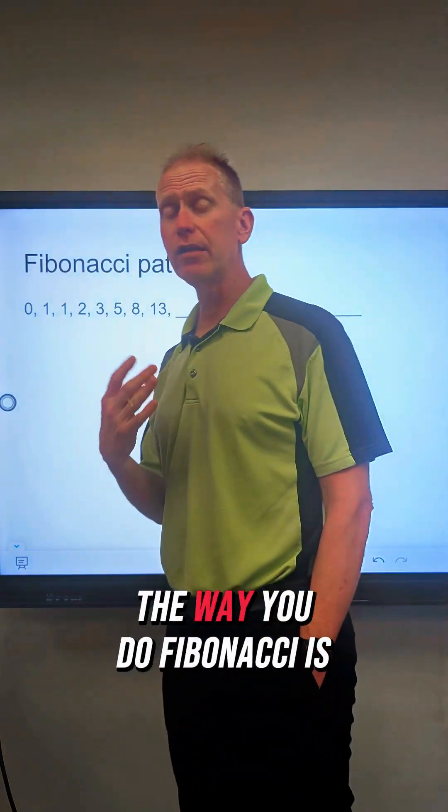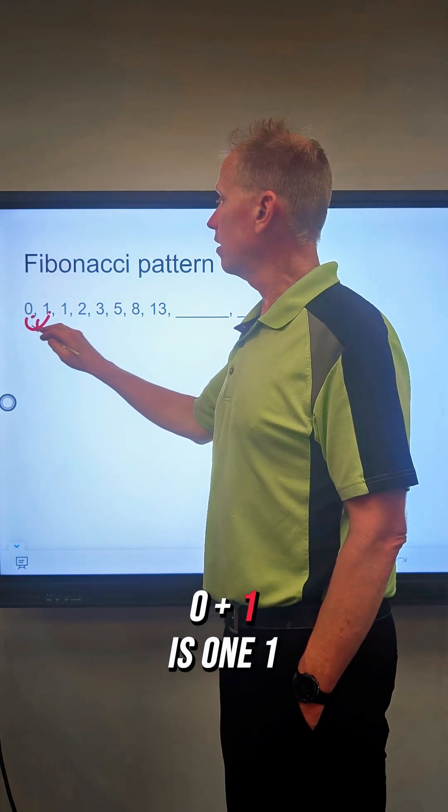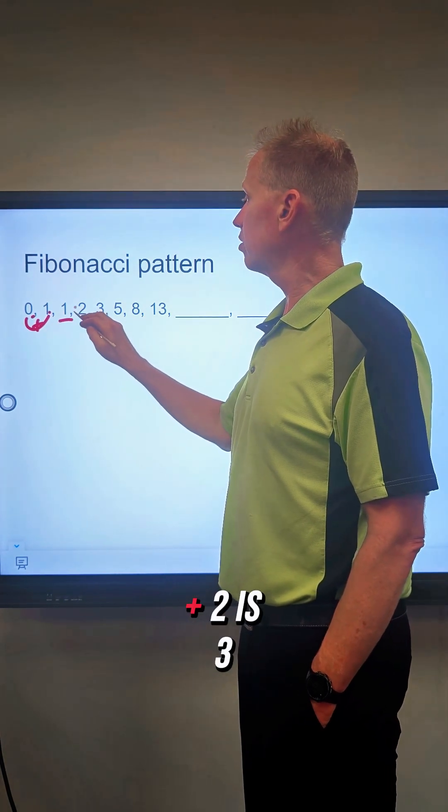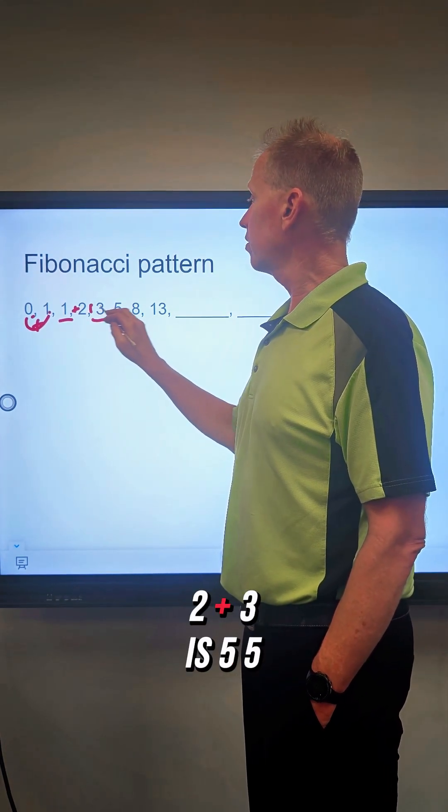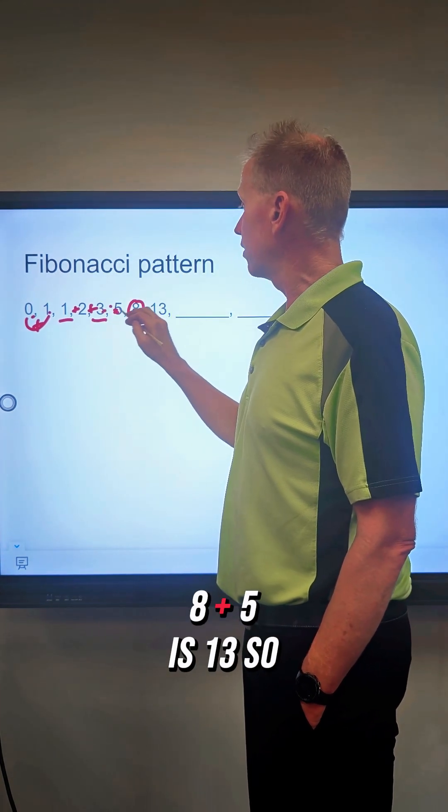It turns out the way you do Fibonacci is you add the previous two numbers. 0 plus 1 is 1, 1 plus 2 is 3, 2 plus 3 is 5, 5 plus 3 is 8, 8 plus 5 is 13.